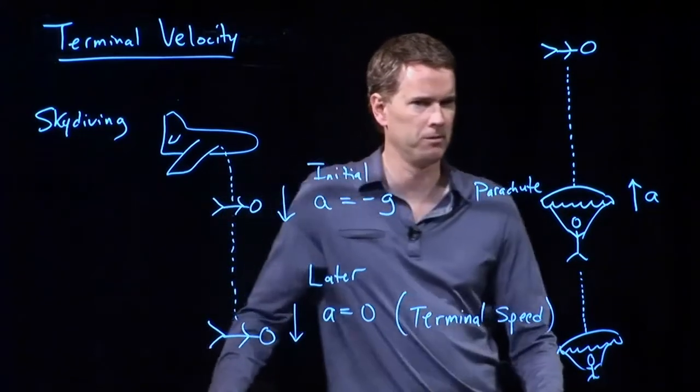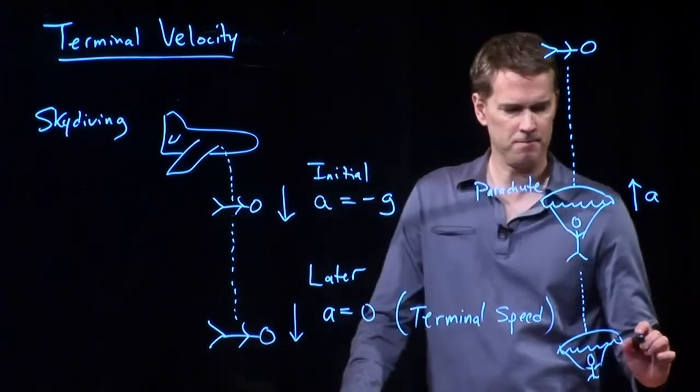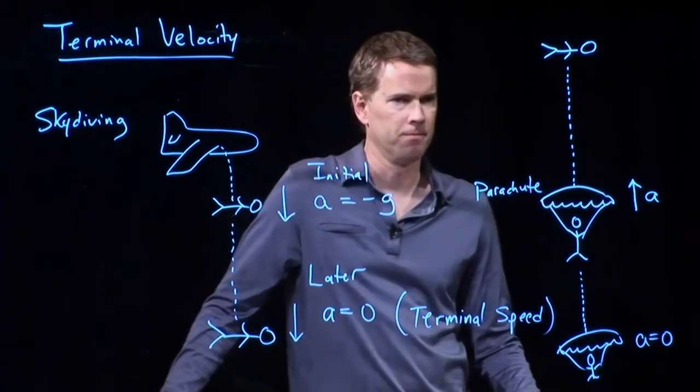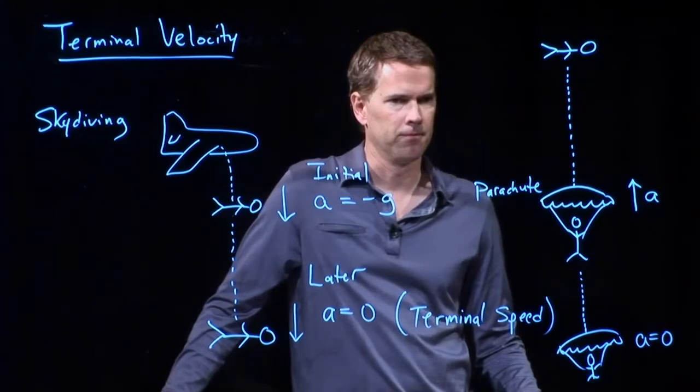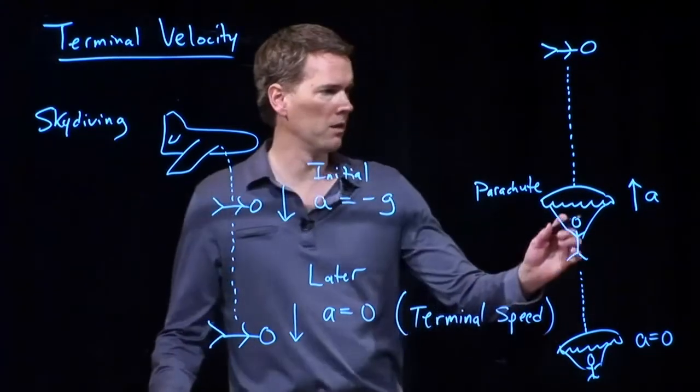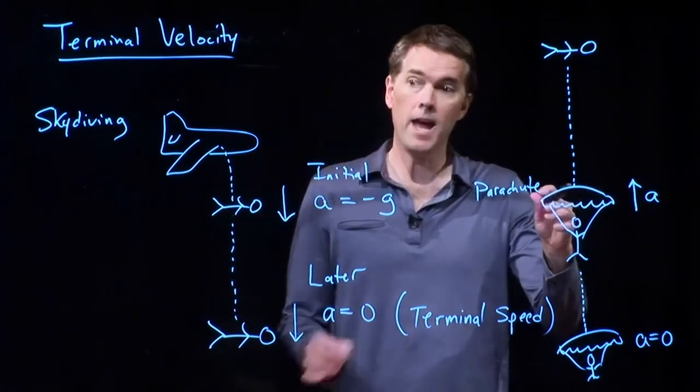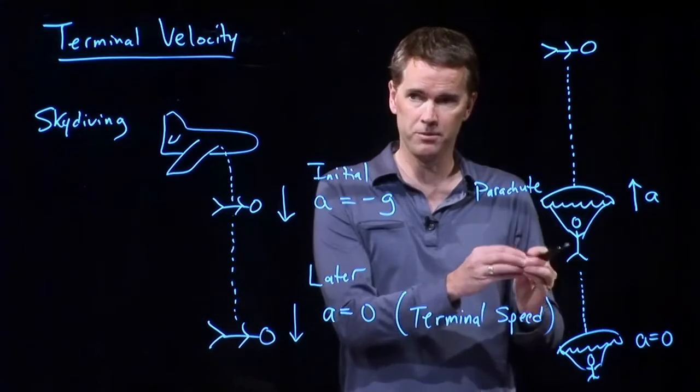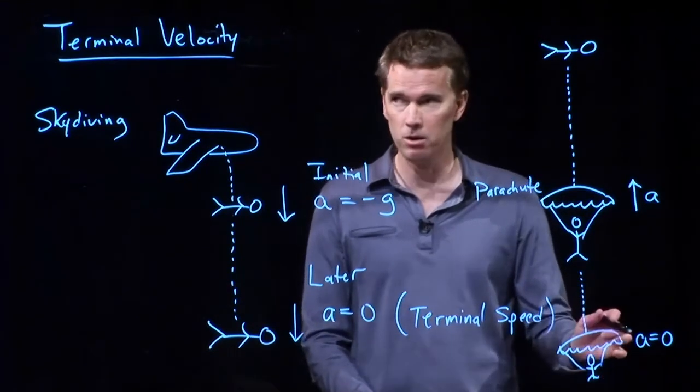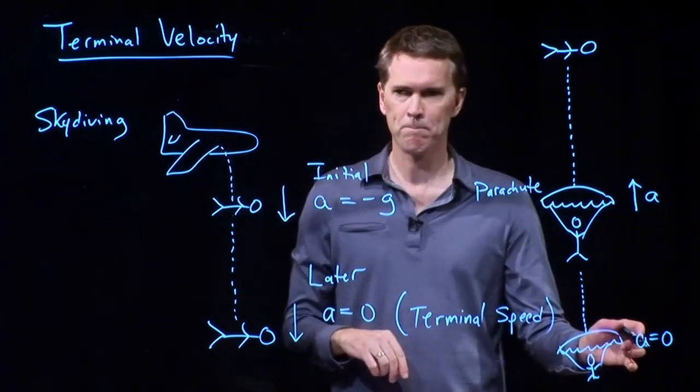What do you think, Thomas? Exactly right. You're going to accelerate upward for a little while, while your parachute opens, and that's to slow down your speed. And once that speed reaches a new terminal velocity, then the acceleration goes back to zero.